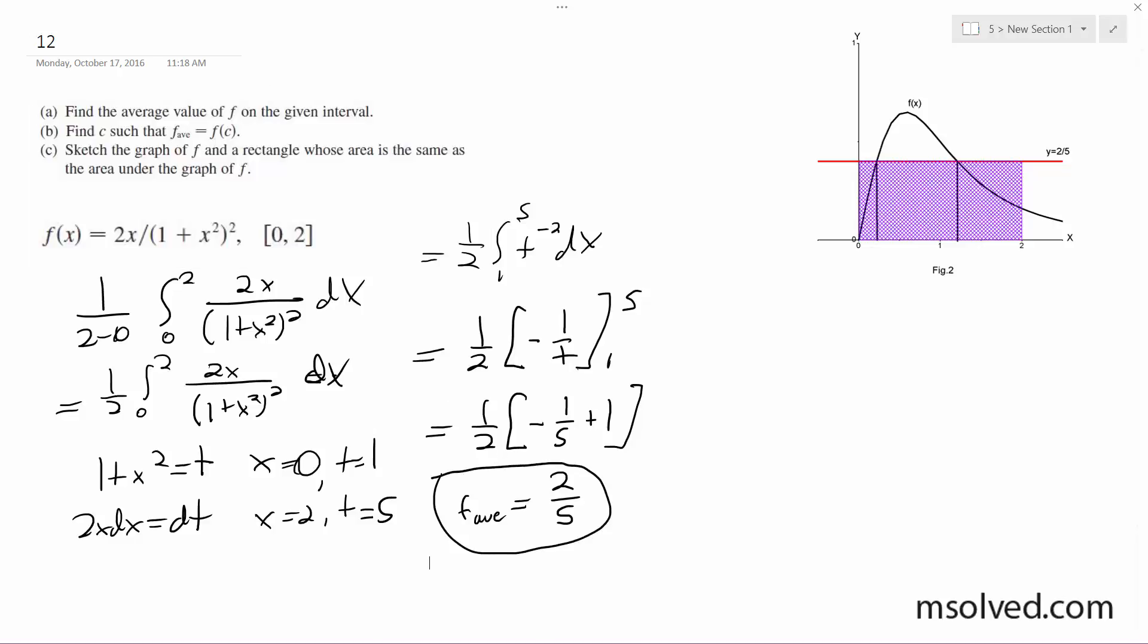And f of c, so f average equals f of c. 2c over 1 plus c squared, squared, equals 2 fifths.